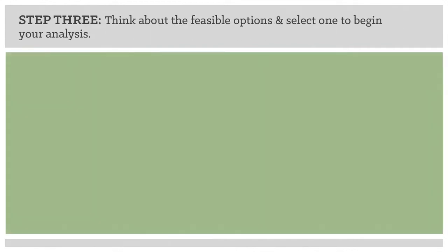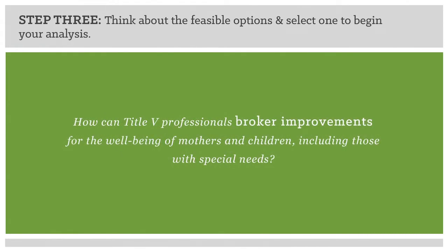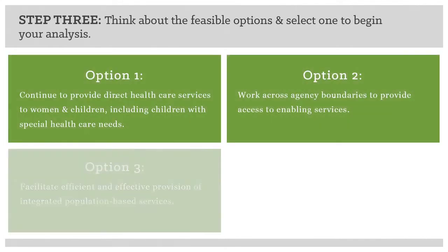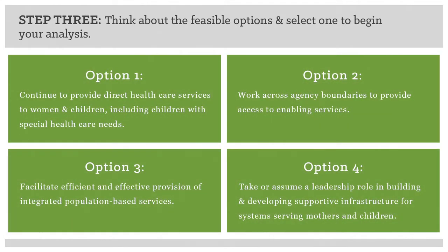Step three requires decision making. When you think about your question, how might you make it more adaptive in nature? You might reframe the question to ask: how can Title V professionals broker improvements for the well-being of mothers and children, including those with special needs? Now consider the possible ways you might answer the question—which option will lead you to the desired outcomes? For this tutorial and planning tool, four options are identified, and you and your team will choose one to work through.